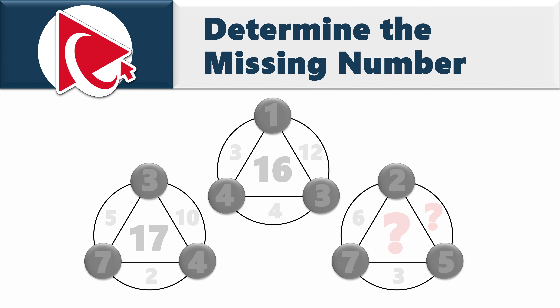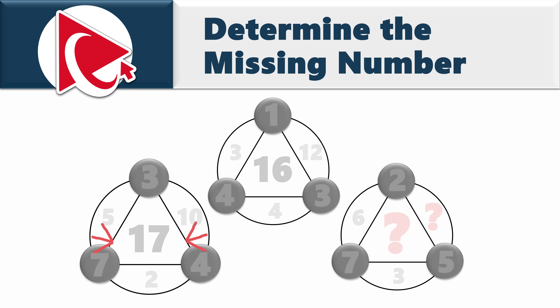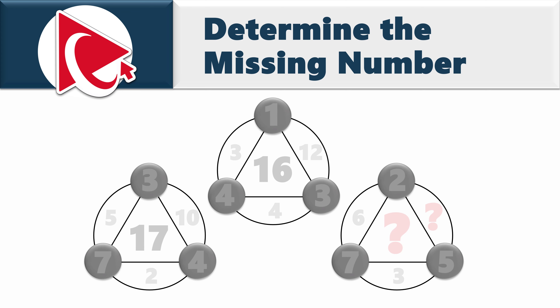You're presented with unusually looking shapes. Shapes have numbers inside. The middle number in the first shape is 17. Numbers in a small circle are 4, 7, and 3. And numbers inside the large circle are 10, 2, and 5.